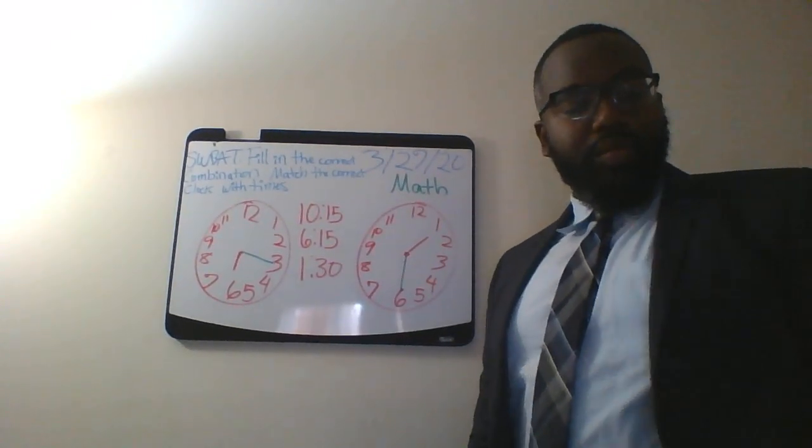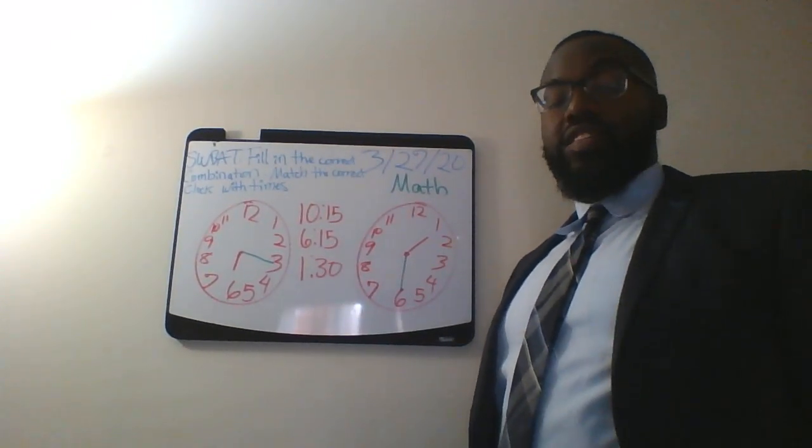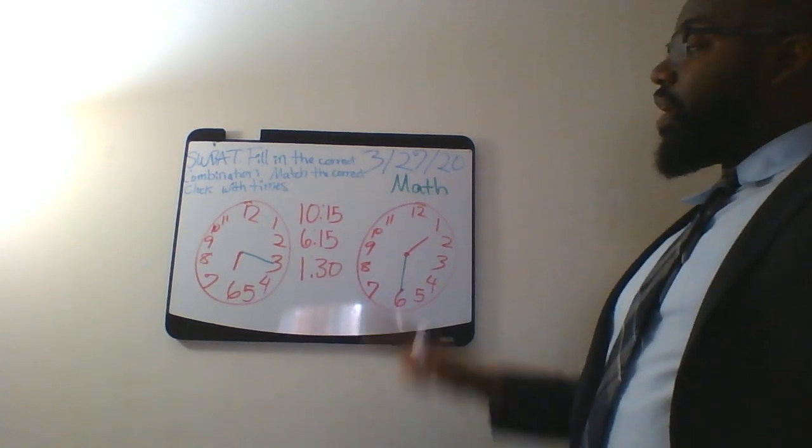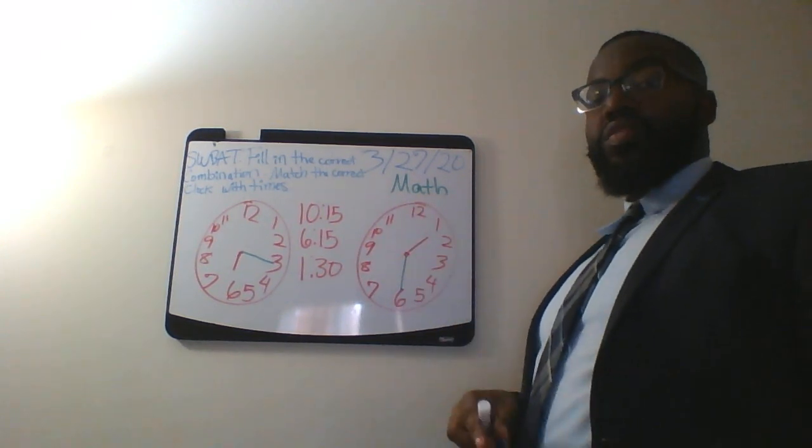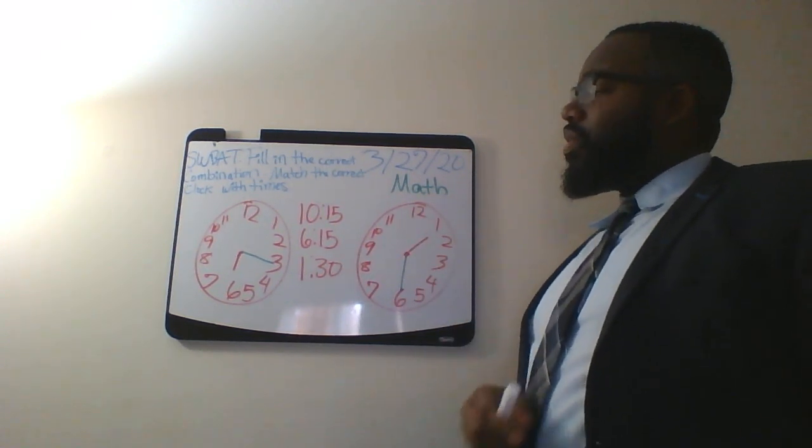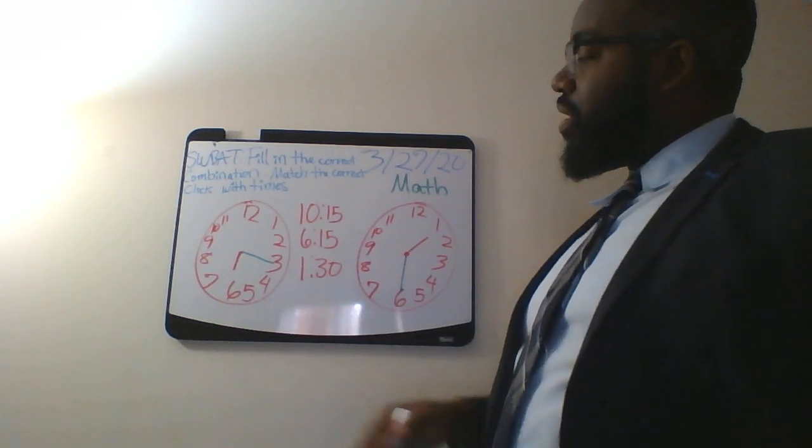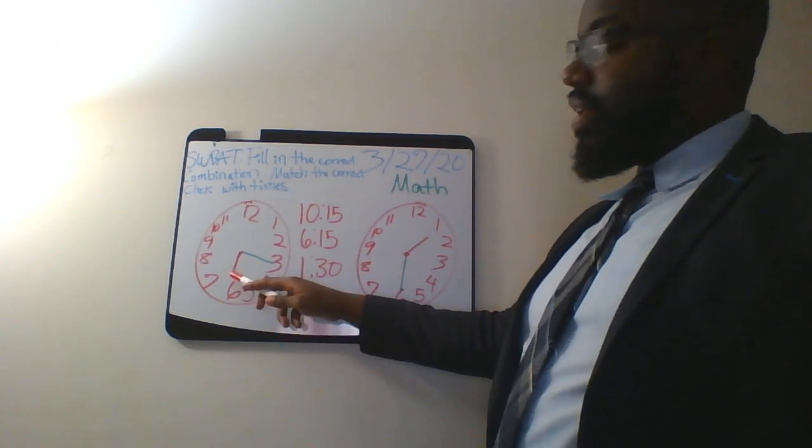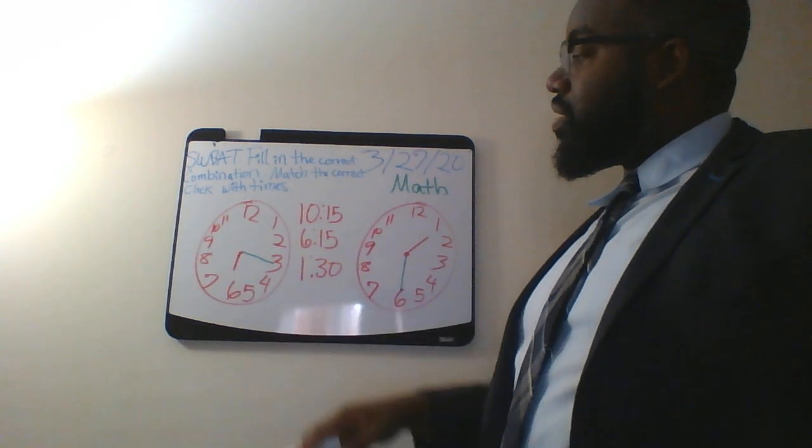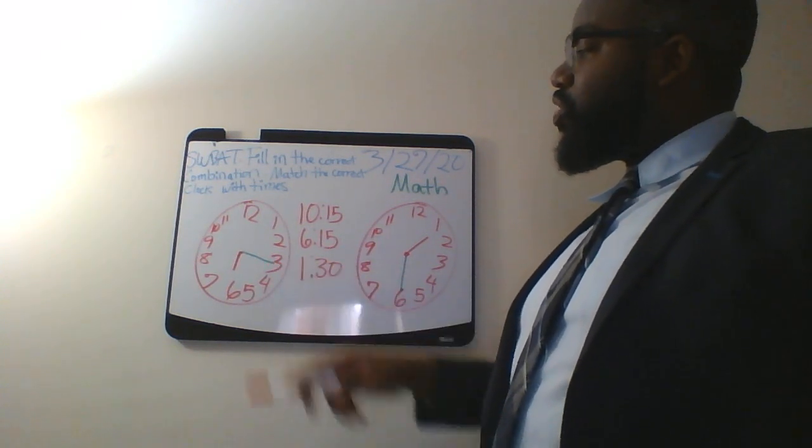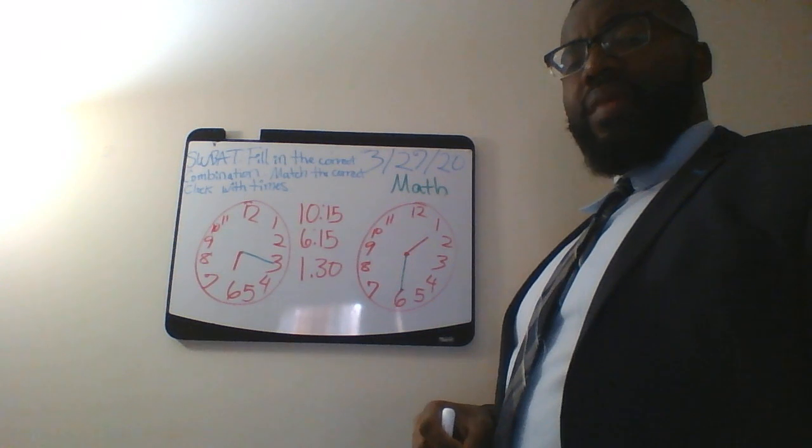Let's look at number 3. Number 3 wants us to match the clocks with the times. So we look at this first clock. So the hour hand, the short hand is pointed on 6. But the minute hand is pointed on 3. So what time could that be?